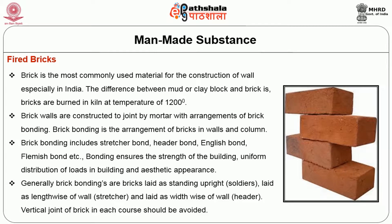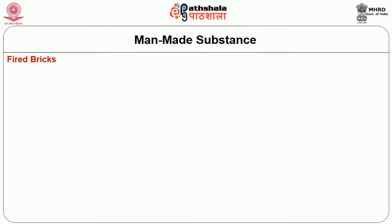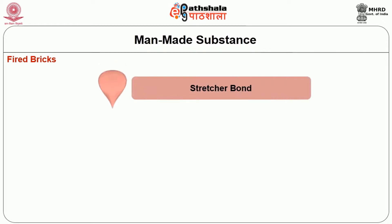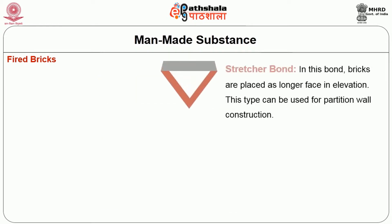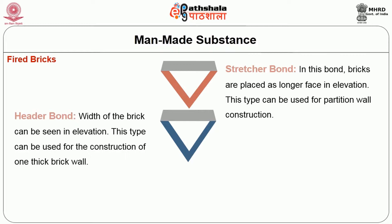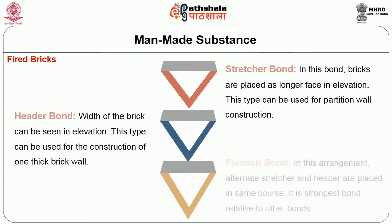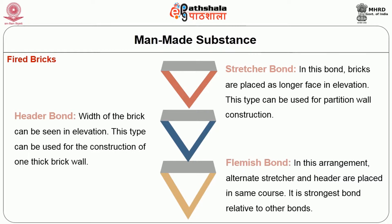Generally, brick bonding positions are: bricks laid standing upright (soldier), laid lengthwise of wall (stretcher), and laid widthwise of wall (header). Vertical joints of bricks in each course should be avoided. The types of brick bond patterns are: stretcher bond, in which bricks are laid with the longer face in elevation, used for partition wall construction; header bond, in which the width of the brick is seen in elevation, used for one-brick-thick wall construction; and Flemish bond, in which alternate stretcher and header are placed in the same course — it is the strongest bond relative to other bonds.